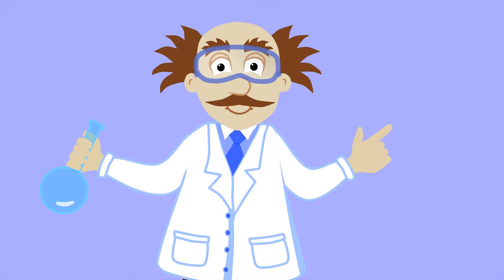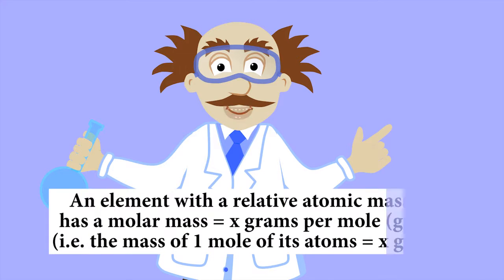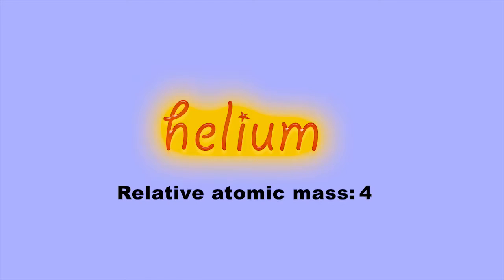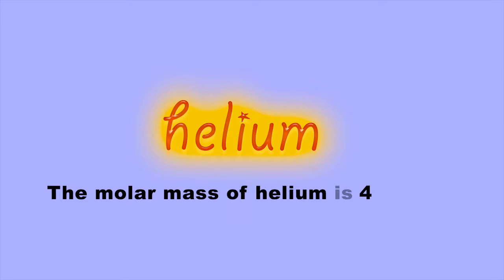You can work out the mass of one mole of atoms of any element by simply looking up its relative atomic mass and saying there are that number of grams per mole. For example, helium has a relative atomic mass of 4, so helium has a molar mass of 4 grams per mole.